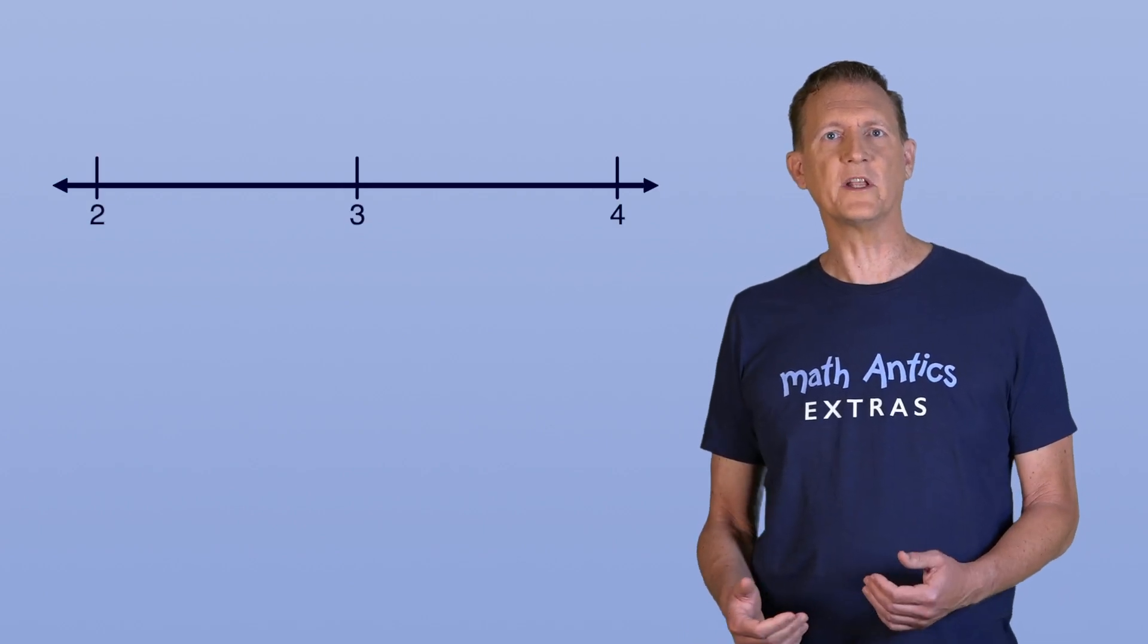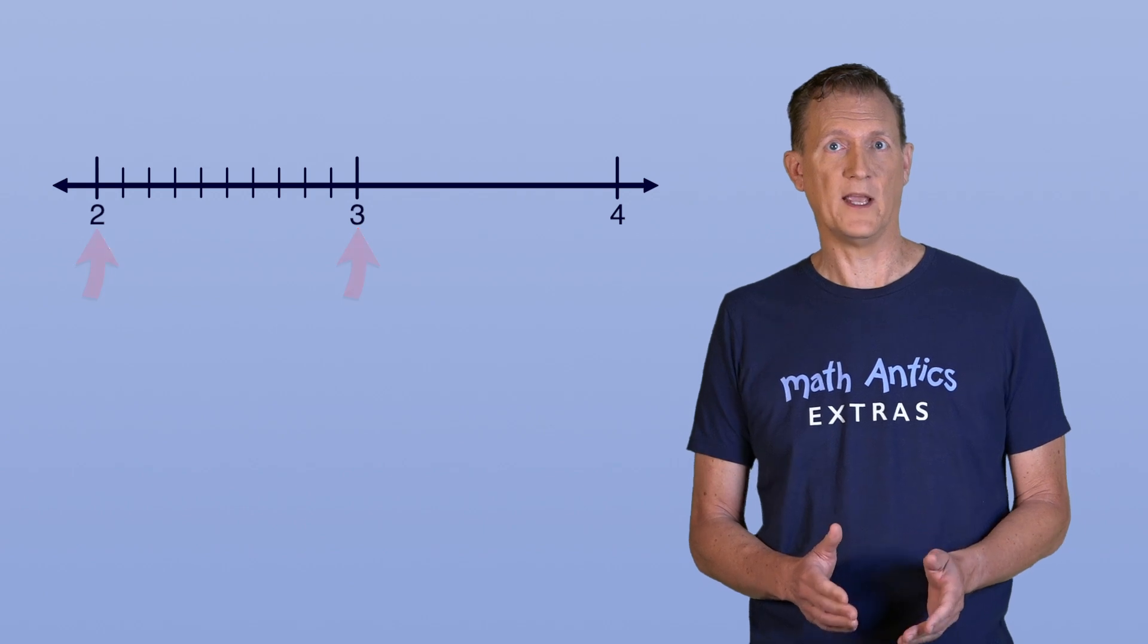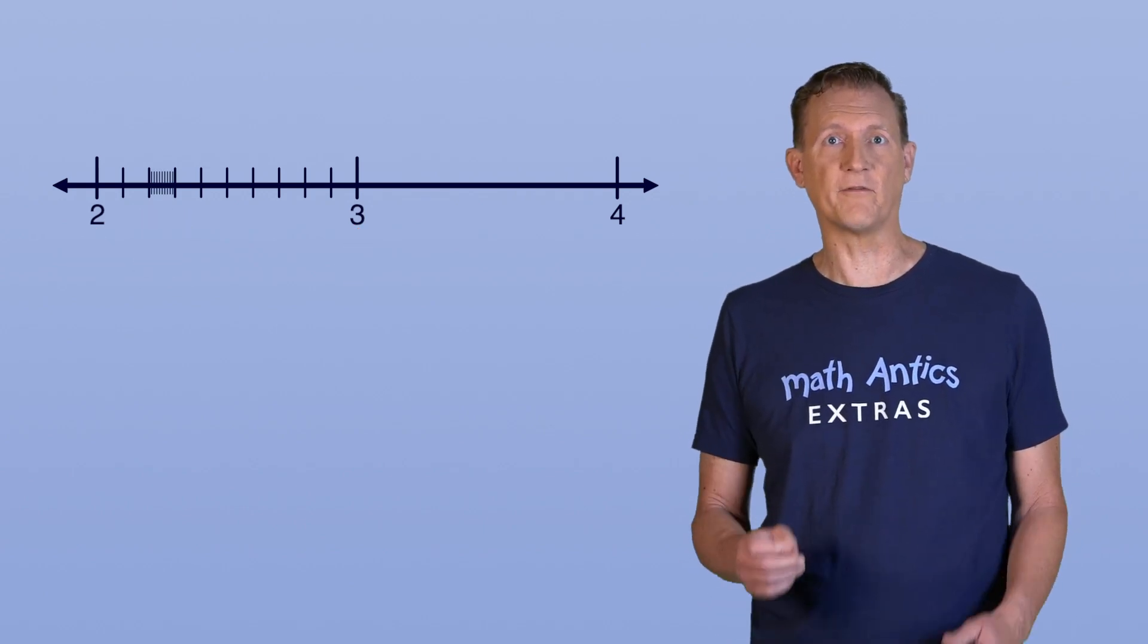There's another cool thing about irrational numbers that I want to show you. In our video lesson about the number line, we learned that you can subdivide the space between two consecutive marks on the number line. And you can subdivide the smaller space between two of those new marks. And you can keep doing that, forever.